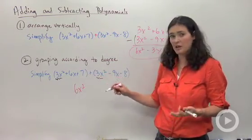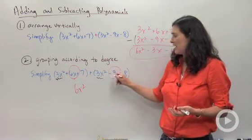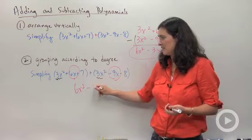Then I'm looking for my regular x terms. I have 6x here, take away 9x, so all together that's negative 3x.